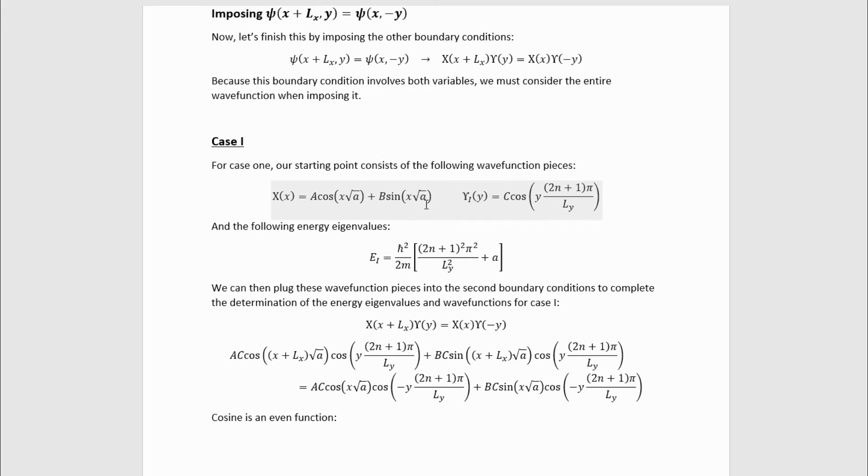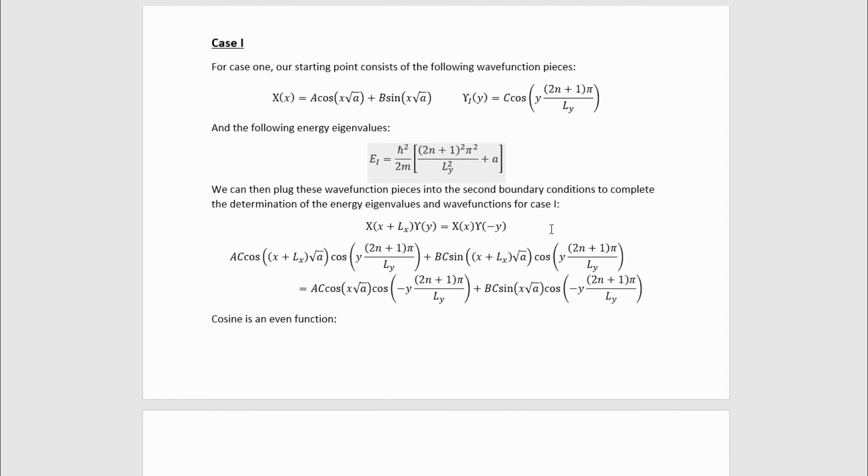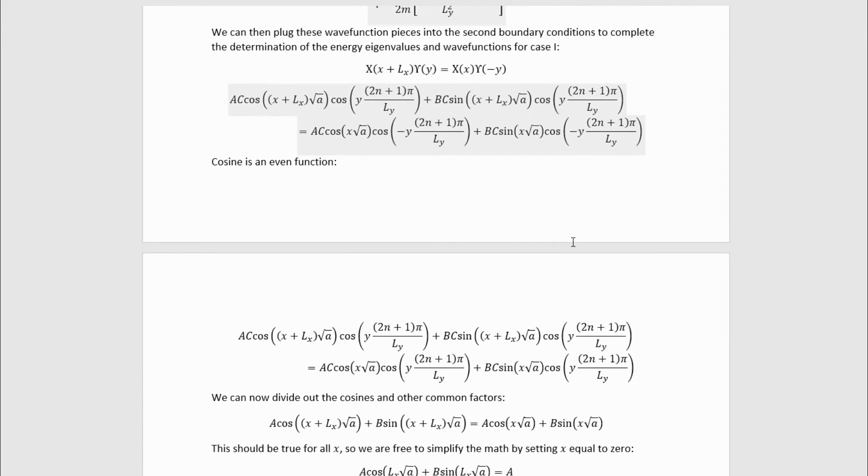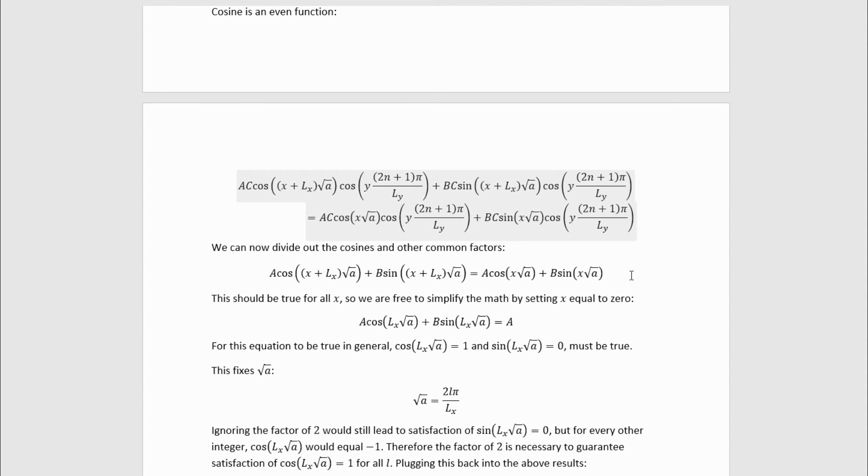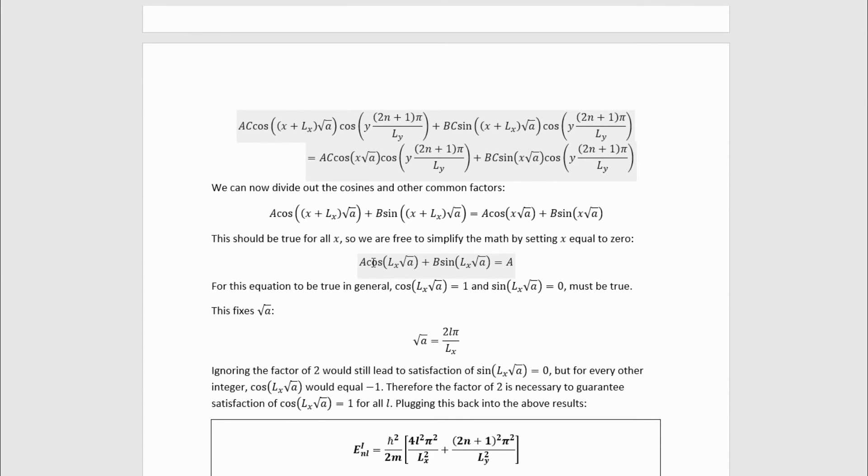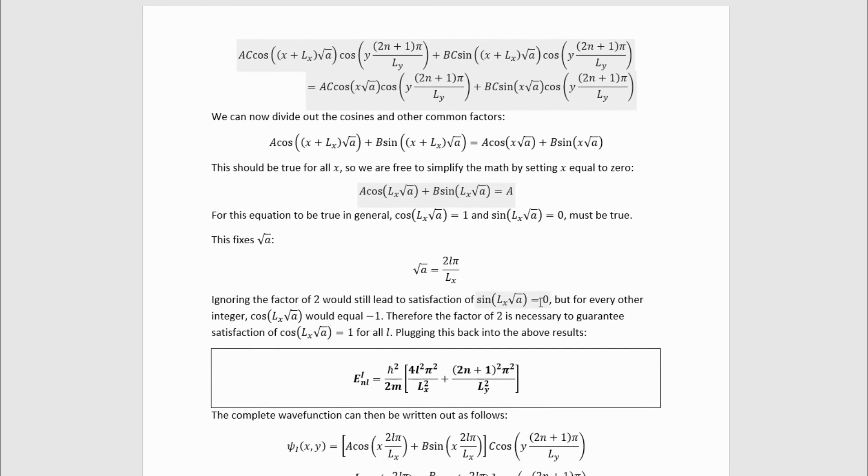So case 1 involves starting with these wave function components and these partially unspecified energy eigenvalues. These are the boundary conditions we've got. Plugging the wave function pieces in gets us here. We can then remember that cosine is even, and therefore this minus sign can be taken away, which gets us to this. We can then divide out common factors, which gets us here. Then this should be true equally for all x. And if we prove it for one particular value of x, it should be good for all the others, given that everything else other than x here is a constant. So we're free to take x equal to zero and simplify our math, which gives us this relation.